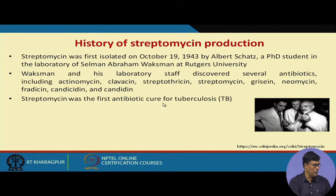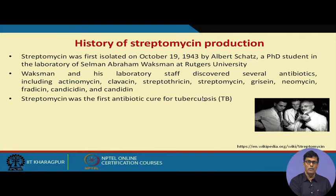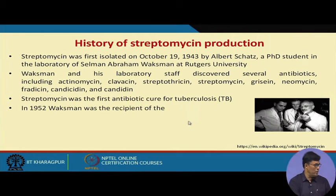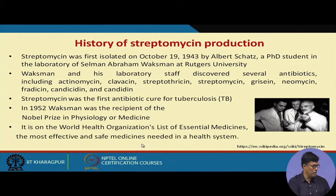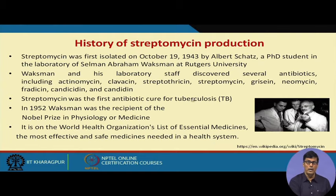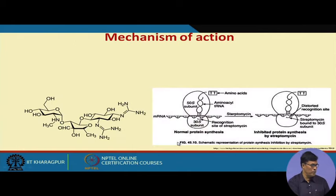Streptomycin was the first antibiotic to cure tuberculosis. TB is a deadly disease and historically many well-known people were killed due to TB infection. In 1952, Waksman was the recipient of the Nobel Prize in Physiology or Medicine. Streptomycin is on the World Health Organization list of essential medicines — the most effective and safe medicines needed in the health system.